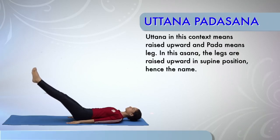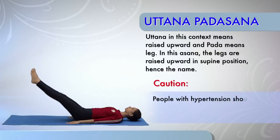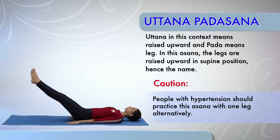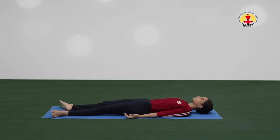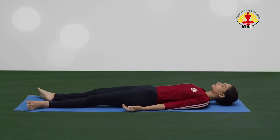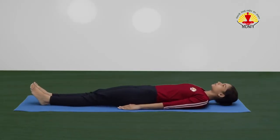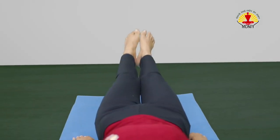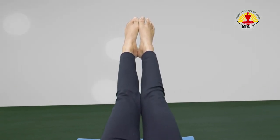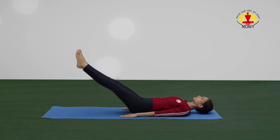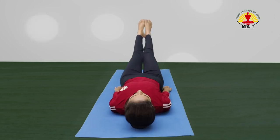Uttan Padasana or the Raised Leg Position. Caution! People with hypertension should practice this asana with one leg. Alternatively, lie comfortably on the ground, hands placed by the sides and palms facing down. While inhaling, slowly raise both the legs without bending them at the knees until you are able to see the tips of toes. Maintain the final position for three to ten breaths with body awareness.